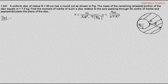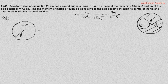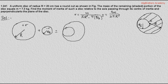We consider the given system as a superposition of two complete discs: one of positive density and radius R, and other of negative density but of the same magnitude and radius R/2. After superposition we get the disc given in the question.